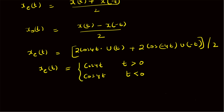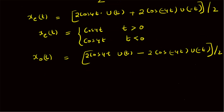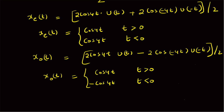Next, we find the odd component: x_o of t is equal to 2 times cos of 4t times u of t, minus 2 times cos of minus 4t times u of minus t, all divided by 2. This simplifies to cos of 4t for positive values of t, and minus cos of 4t for negative values of t, because of the minus 2 times cos of minus 4t term. So that is the nature of the odd component.